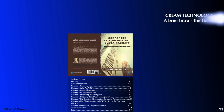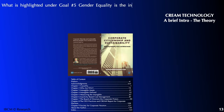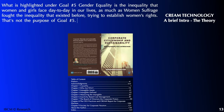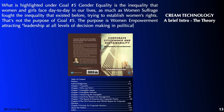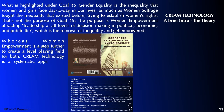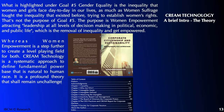A brief account of IPR CREAM Technology: what is highlighted in Goal 5 — gender equality — is the inequality that women and girls face day to day. As much as women's suffrage addressed the inequality that existed before, trying to establish women's rights is not the purpose of Goal 5. The purpose is women empowerment — attracting leadership at all levels of decision making in political, economic, and public life — which is the removal of inequality. CREAM Technology is a systematic approach to define the fundamental power base that is natural to the human race. It is a profound theory that shall remain unchallenged forever, assisting organizations to establish a robust management operating system. The intangible is proved as a constant — an energy force with a fixed value in a specified mathematical context — enabling the accomplishment of an infinite succession of finite purposes by controlling each goal, which is the common denominator by which gender equality is obtained.